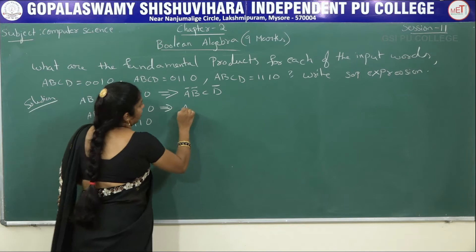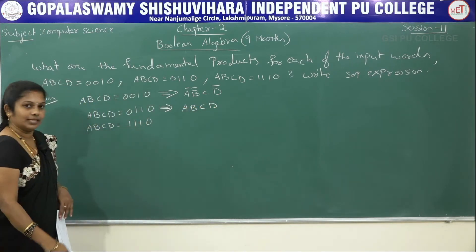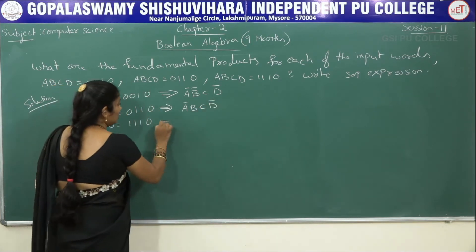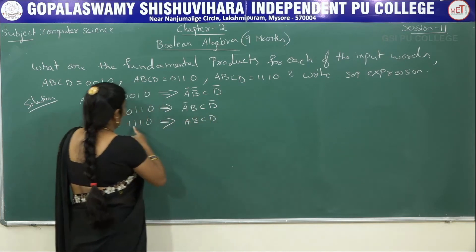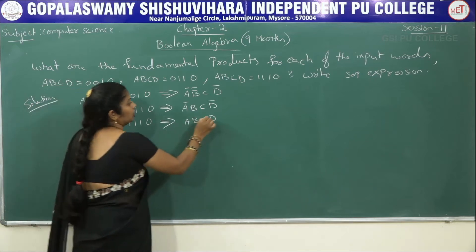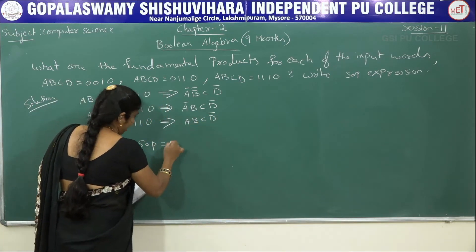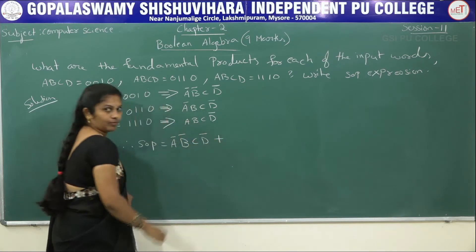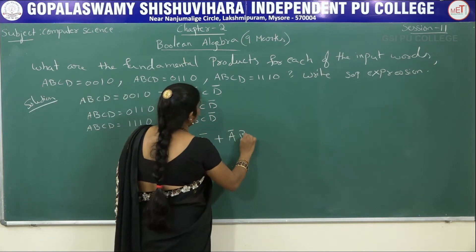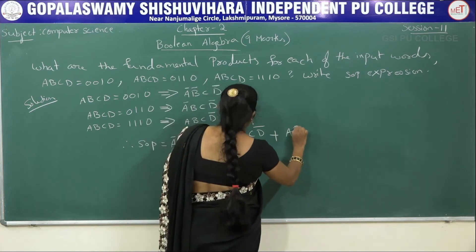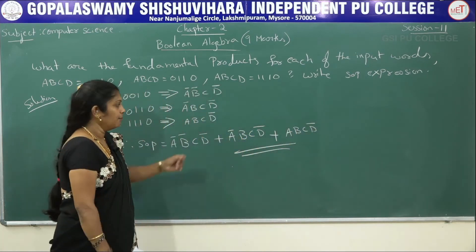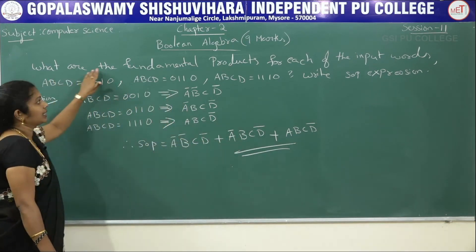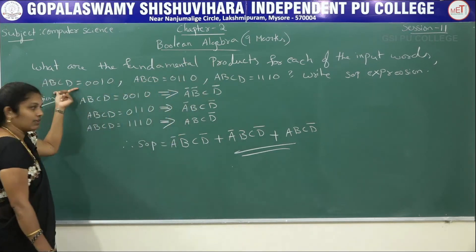For the second input ABCD = 0110: A is 0 → Ā, B is 1 → B (no complement), C is 1 → C, D is 0 → D̄. For the last input ABCD = 1110: the first three are 1 so no complement; only the last variable D gets a complement. Therefore the sum of products equals ĀB̄CD̄ + ĀBD̄ + ABCD̄.